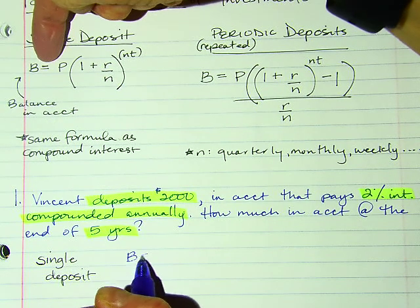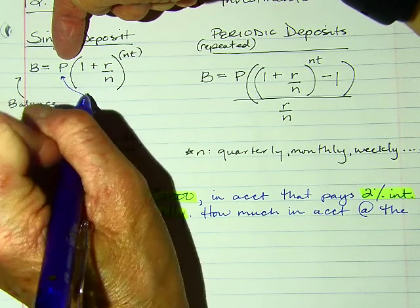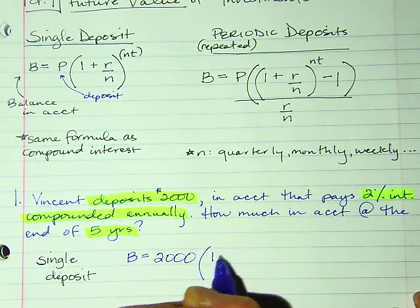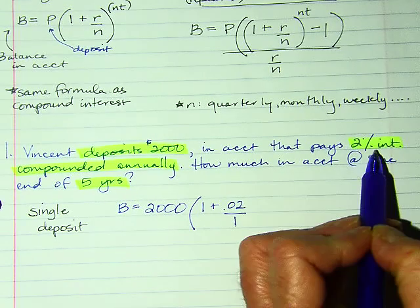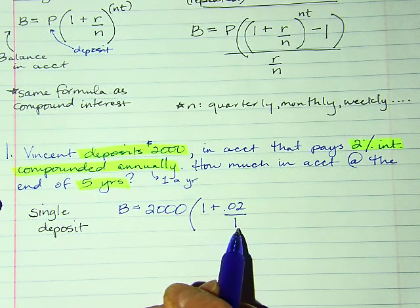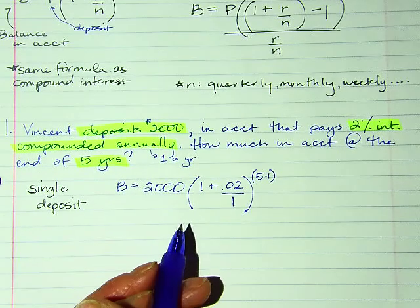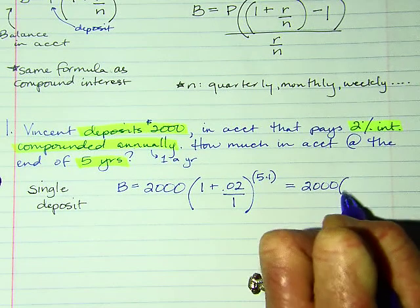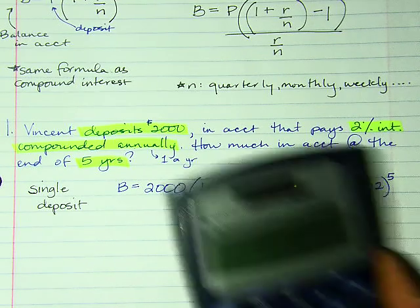Balance = P, and P is my deposit. So: 2,000 × (1 + 0.02/1)^(5×1). Compounded annually means once a year, so n = 1. We don't need the 1s, so this simplifies to: 2,000 × (1 + 0.02)^5. That's how I'm going to enter it in the calculator.